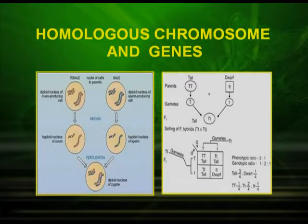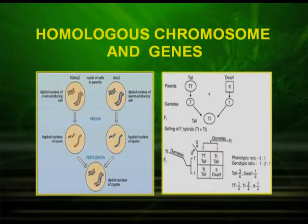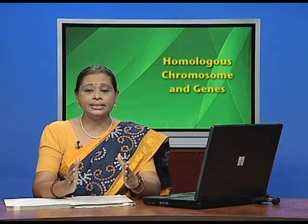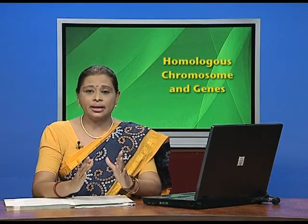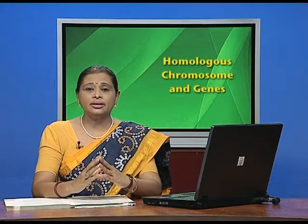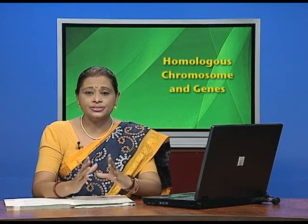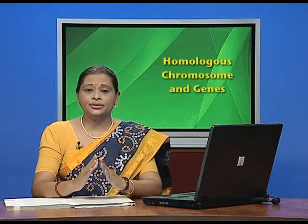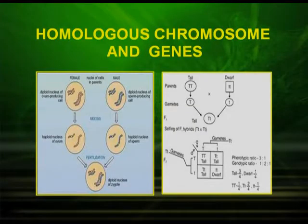We can correlate Mendelian inheritance with the movement of homologous chromosomes. When a tall plant (TT) is crossed with a dwarf plant (tt), gametes carry only one allele — T or t. In F1, the two alleles are brought together (Tt). Similarly, homologous chromosomes are in paired condition in diploid cells, separate during gamete formation, and reunite during zygote formation. There is thus a close relation between the behavior of chromosomes and genes, as seen in independent assortment in Mendel's dihybrid cross.